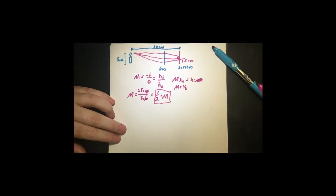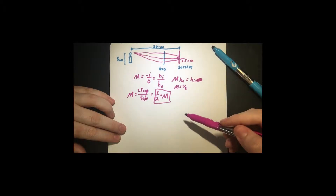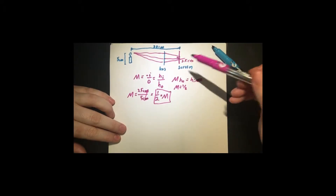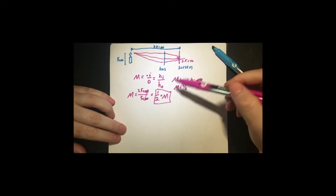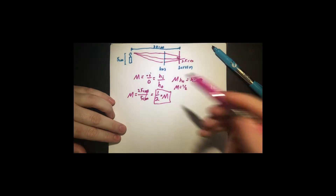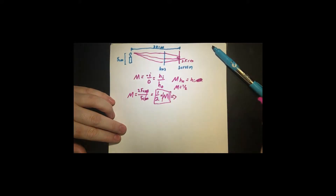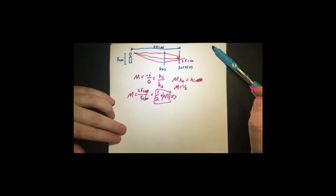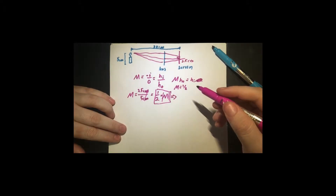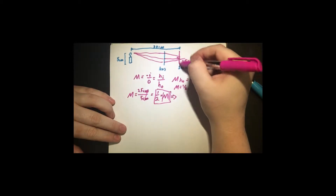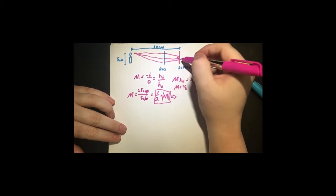Now we want to talk about what the sign of this magnification is. Are we saying that it's growing or shrinking? Well, just by looking at it, we know the image is shrinking, so the magnification is negative. We should put an absolute value sign here because we didn't say if it's real or virtual. We want to know if the image is inverted. We know the image is real because this is a screen and the actual light is hitting this screen.